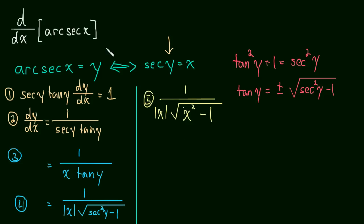That's what we're after. We've solved our problem. So this derivative is equal to 1 over the absolute value of x times the square root of x squared minus 1.